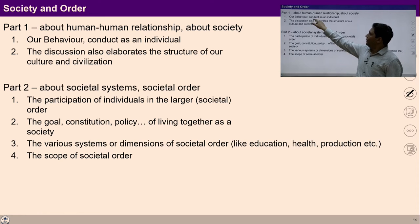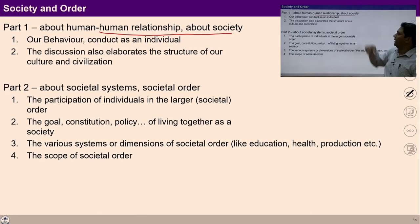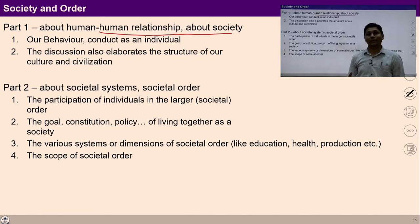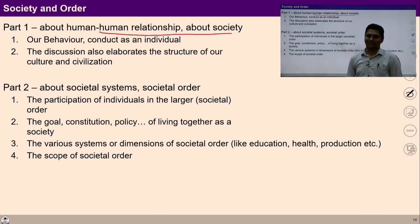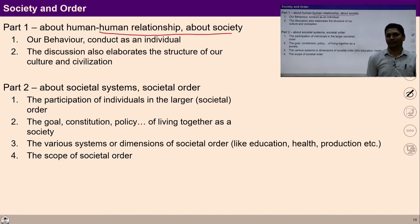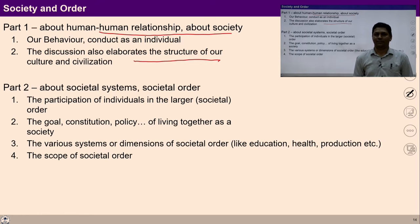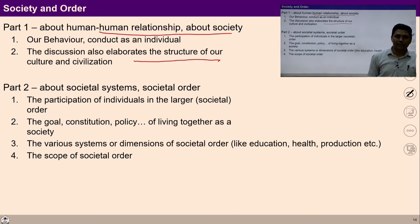In part one, we will detail the human-human relationship and elaborate on society. What will be the basis of human conduct as an individual? What will be the way of fulfilling relations with everyone in complementarity? We will also discuss the conduct and behavior identified as human conduct, and the absence of these will be identified as inhuman conduct and behavior. The discussion also elaborates the structure of our culture and civilization being lived collectively.